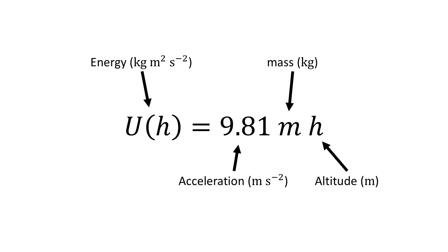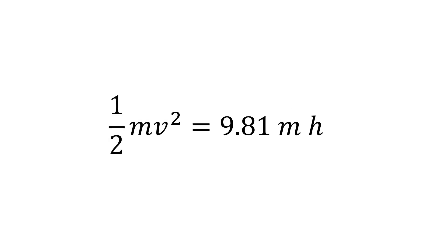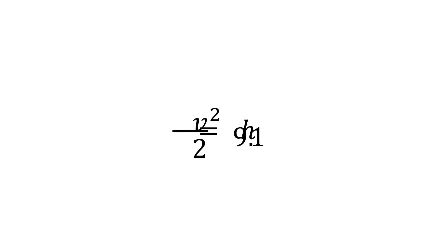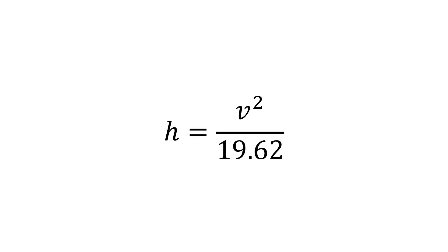Now it doesn't matter where this 9.81 meters per second squared comes from — it is just there, just accept it. And we know from the conservation of mechanical energy that the maximum height an object with some kinetic energy can reach is found using this expression. We can cancel the m's and rearrange for h to get this.